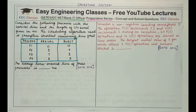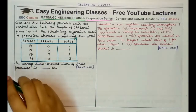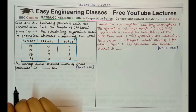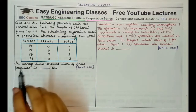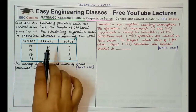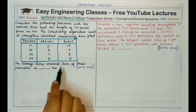The first question is based on preemptive shortest remaining time first, and the second one is on a counting semaphore. Consider the following processes with the arrival time and length of CPU burst given in milliseconds. The scheduling algorithm used is preemptive shortest remaining time first.